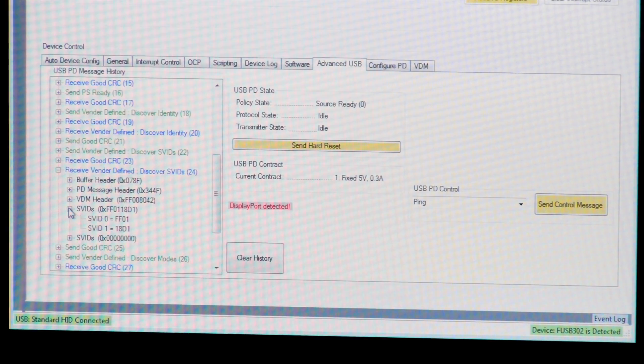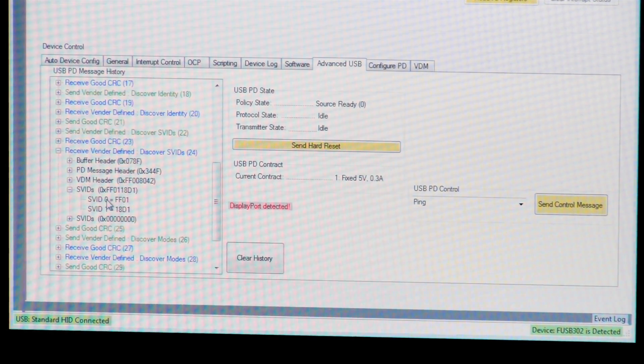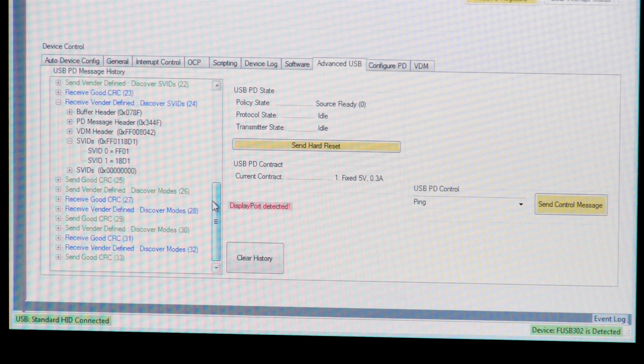As you can see here, two different IDs were reported. One is the standard ID for DisplayPort, and the other is a vendor ID. Once the device understands what was connected and who made the device that was connected, it then can determine which modes this adapter supports. This is done through Discover Modes and Response. This allows various devices to all work together.